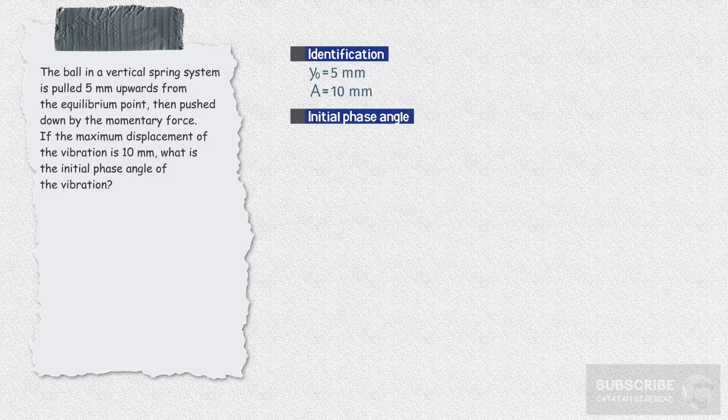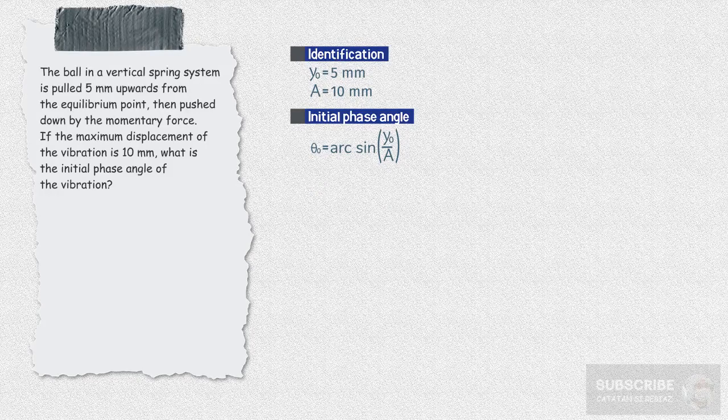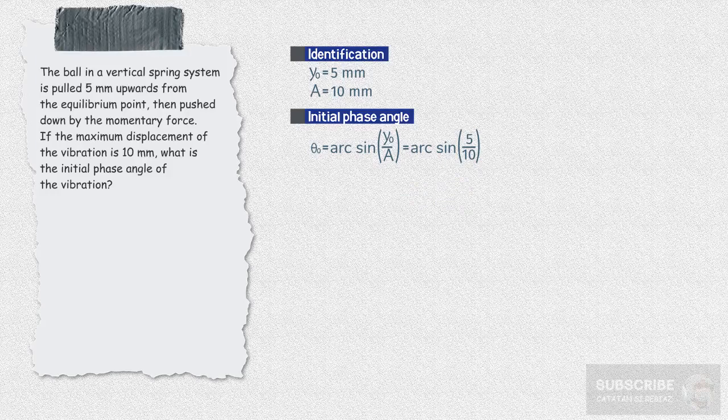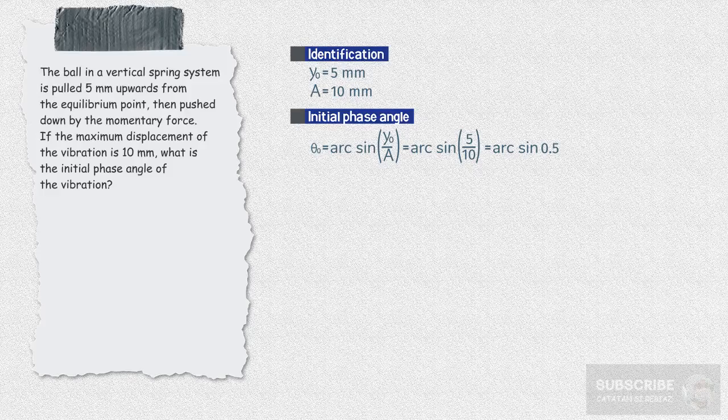Next, we can calculate the initial phase angle. Theta zero is equal to arc sine y zero over a. Enter the values of y zero and a: equal to arc sine 0.5, equal to 30 degrees, or 150 degrees.